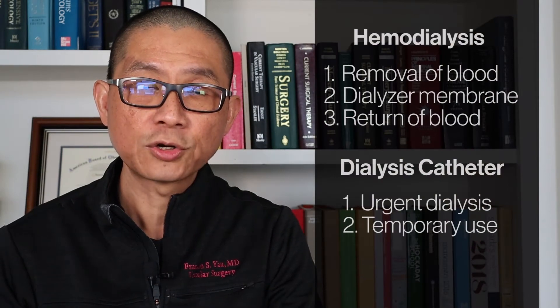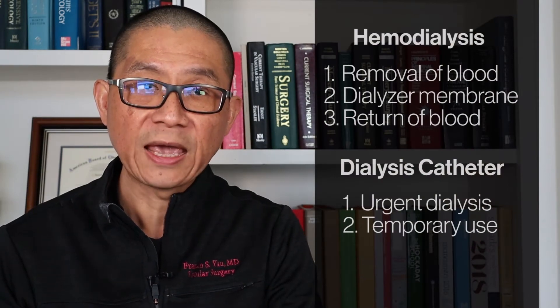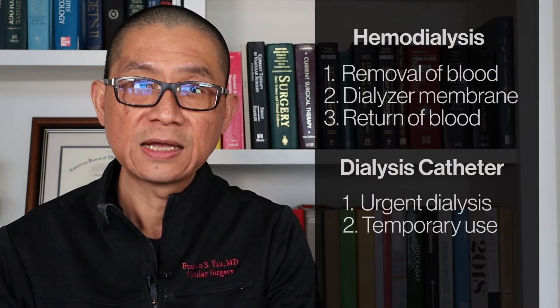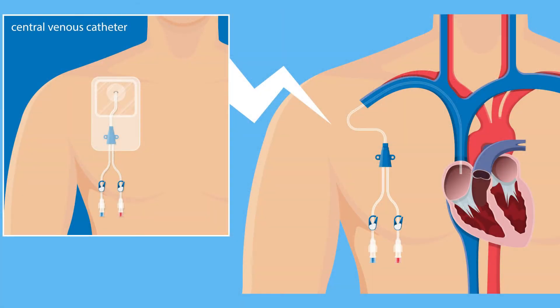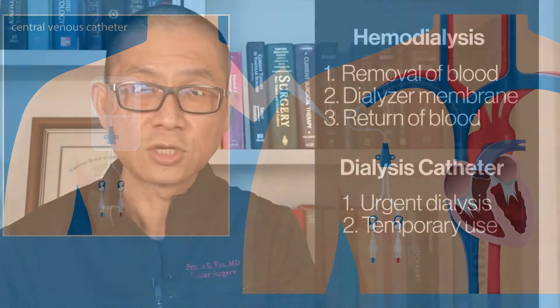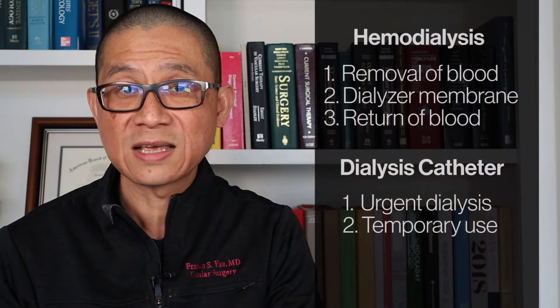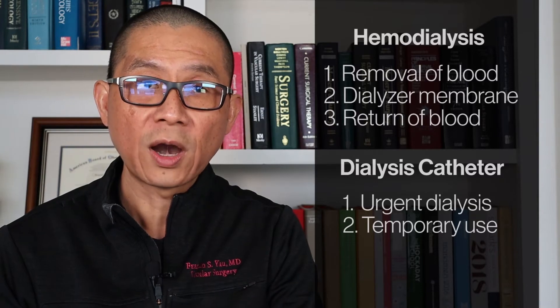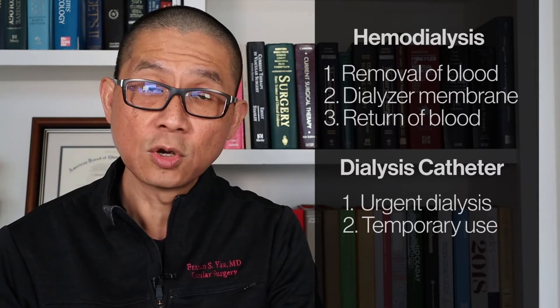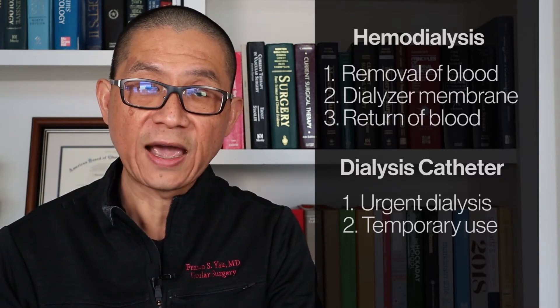If dialysis has to be started urgently, a catheter can be placed immediately and dialysis started right away. These catheters can be inserted into one of the large veins of the upper or lower extremities and can be performed in less than 30 minutes in the cath lab or at the bedside using local anesthesia. These catheters are designed for temporary use or as a bridge to a more permanent surgical access for dialysis.